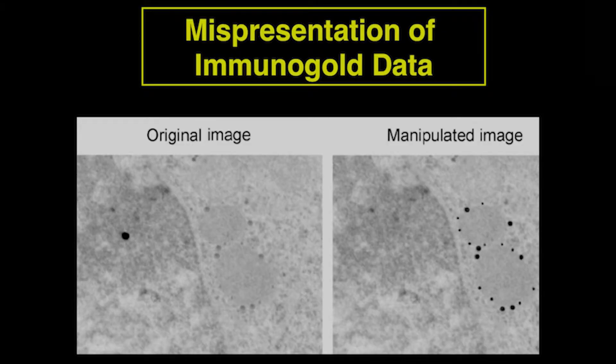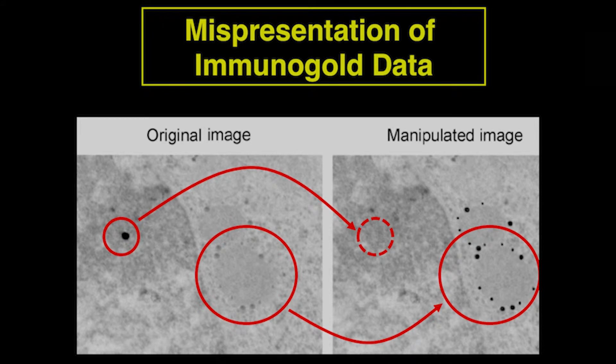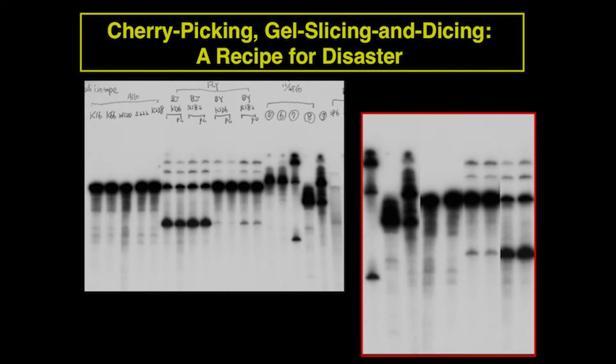There is another form of falsification: misrepresentation of data. Here you can see the original data versus the manipulated image — certain bands have disappeared and others are enhanced to look beautiful. But that is not right and you cannot do that.